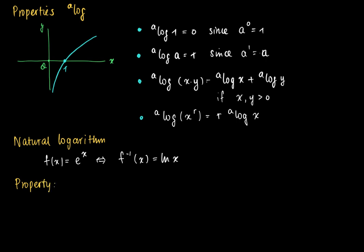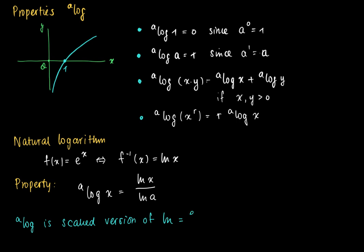There's a very convenient property: it may seem that we need a lot of logarithms, one for any a. But actually, we only need to know one — the natural logarithm. If we understand the natural logarithm, then we can find all values a log of x for any arbitrary a. We see that a log of x is ln(x) divided by ln(a), so the a log is just a scaled version of the natural log, which is the e log.